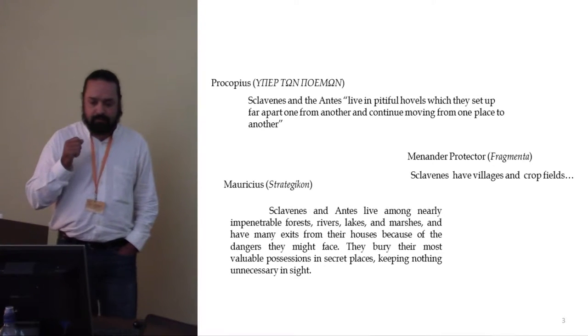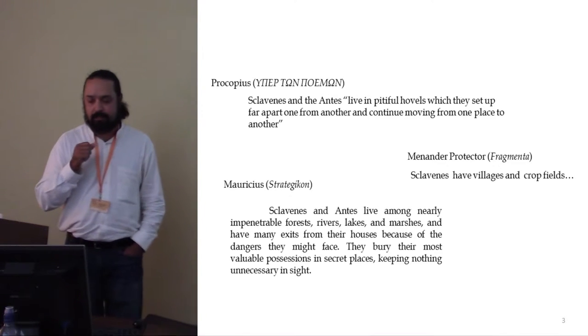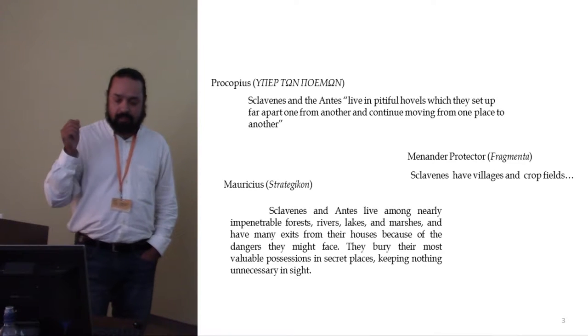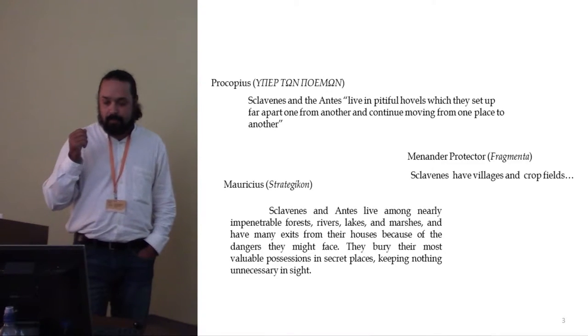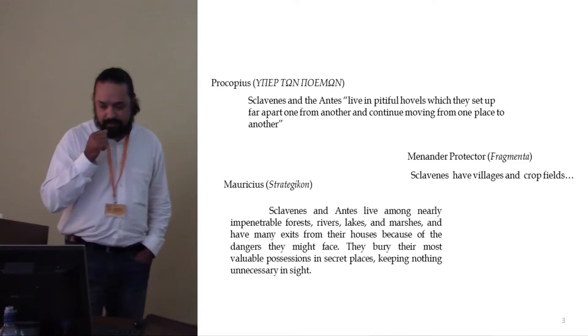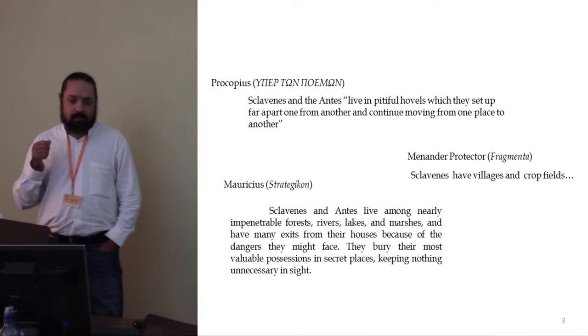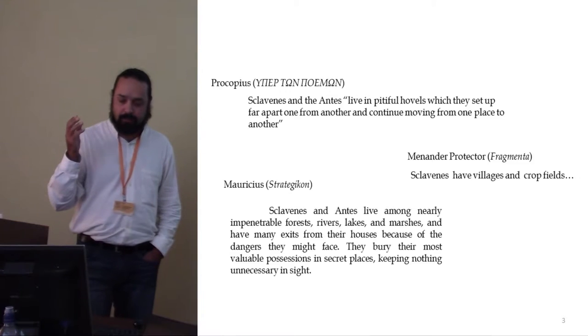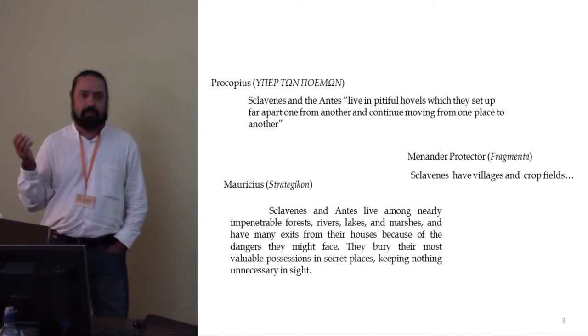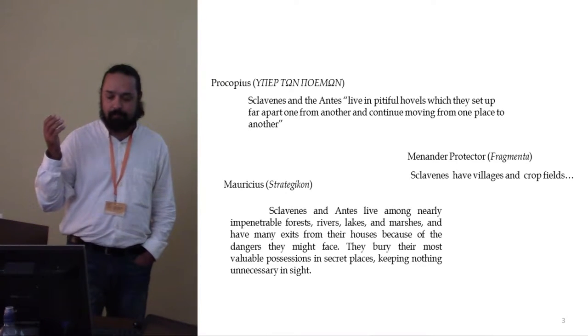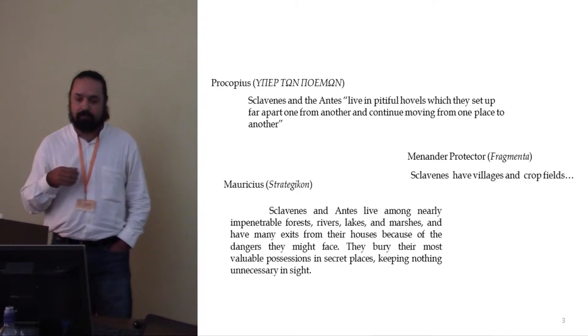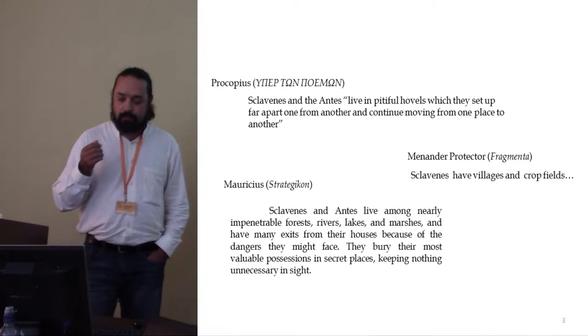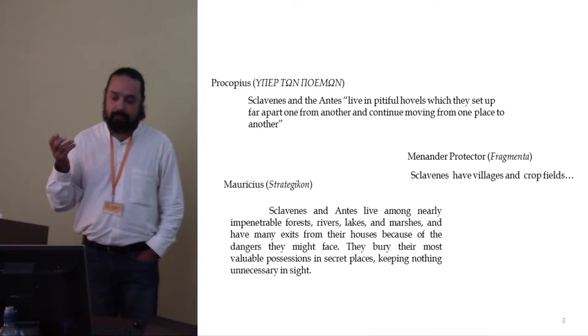More important is information from Mauritius that he said that Sclavini and ants live near impenetrable forests, rivers, lakes and marshes, and they have many exits from their houses because of the danger they may face. They bury their most important valuable possessions in secret places keeping nothing unnecessary inside. This can bring us the image of surface houses because of the many exits and because of the soil near river and near marshes must be full of water, so it cannot be suitable for sunken buildings. And of course, settlements with many storage pits to keep their valuable possessions.